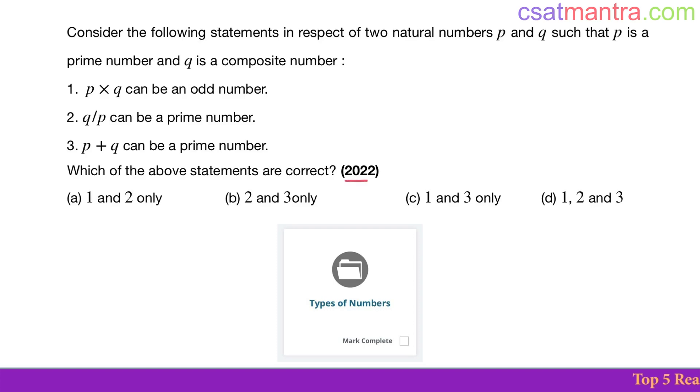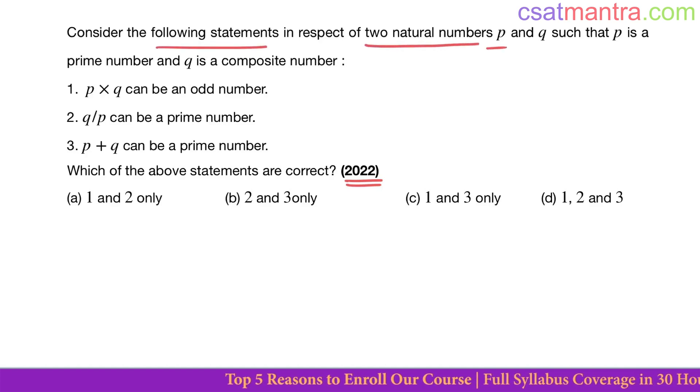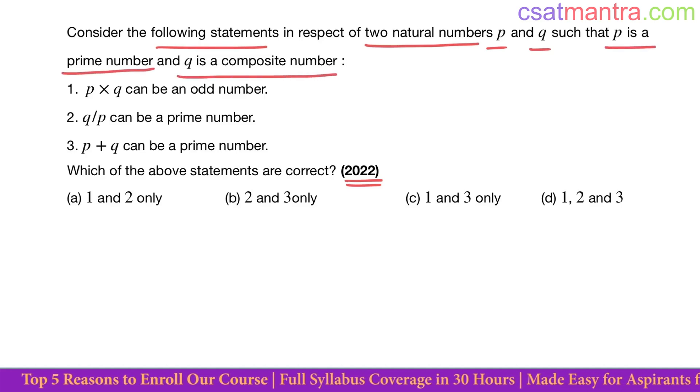This question is asked in 2022 based on types of numbers from number system chapter. Consider the following statements in respect of two natural numbers p and q such that p is a prime number and q is a composite number.